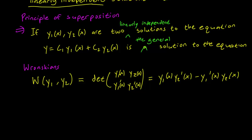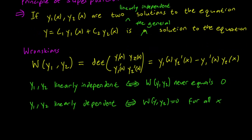So this Wronskian allows us to determine linear independence by this rule. The Wronskian of two solutions is 0 only when y1 and y2 are linearly dependent.